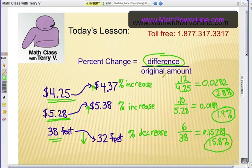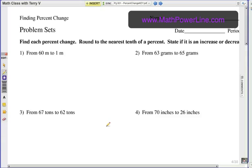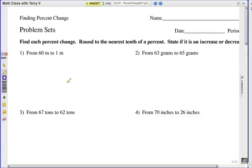I want you to grab a piece of paper, grab a calculator, and try these. So, number 1, you go from 60 meters down to 1 meter. Obviously, that's a percent decrease, but use the formula and figure it out. Notice how it says round to the nearest tenth of a percent, so that would be three decimal places. Number 2, 63 goes up to 65. What percent increase is that? Number 3, 67 goes down to 62. That's a percent decrease. And number 4, from 70 all the way down to 26, another percent decrease. Figure it out.